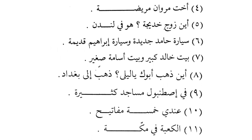Ukhtu Marwan-a Maridatun - the sister of Marwan is sick. Now we can see that Marwan does not have Kasra - it is Mamnoo min as-Sarf. Why? Because it ends with Alif-Noon Zaidatan - an extra Alif-Noon. That is why it is Mamnoo min as-Sarf. So: Ukhtu Marwana Maridatun.